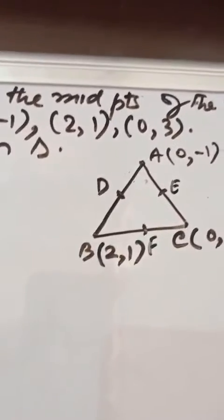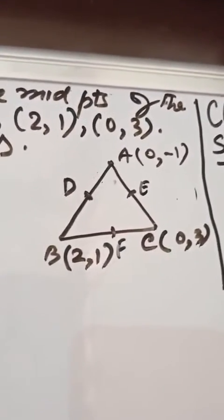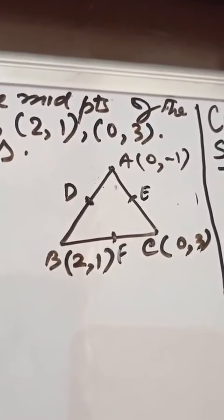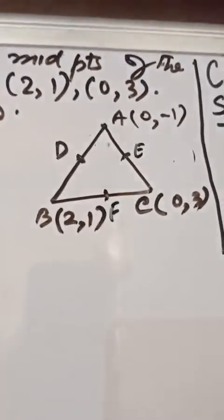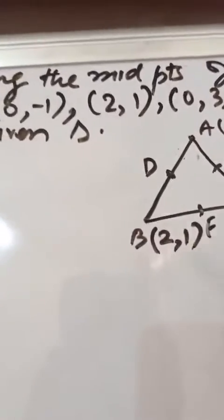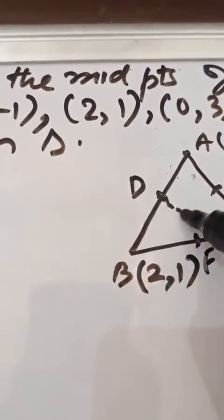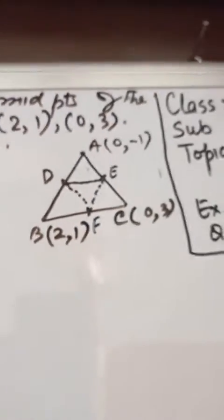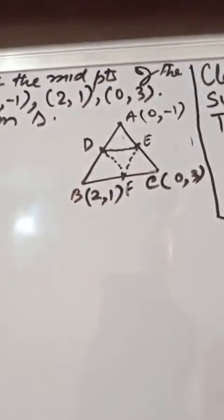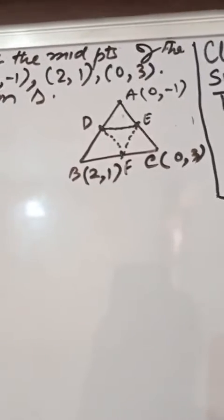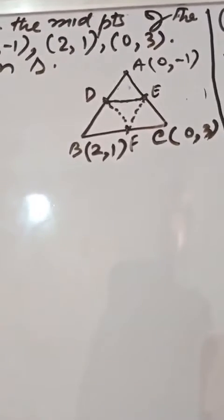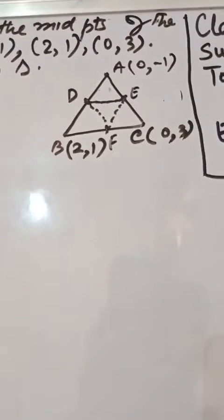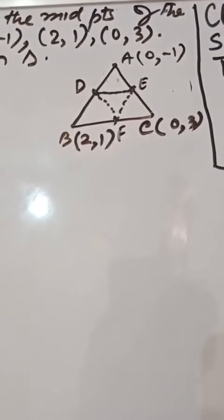AB midpoint is D, BC midpoint is E, and AC midpoint is F. Now we need to find the area of triangle DEF and the ratio between the areas of these two triangles.